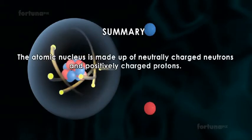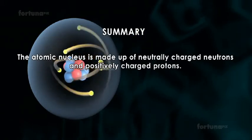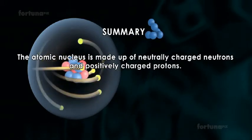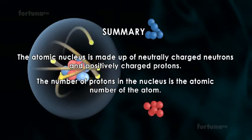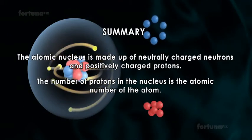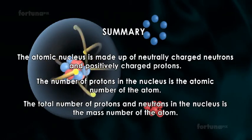The atomic nucleus is made up of neutrally charged neutrons and positively charged protons. The number of protons in the nucleus is the atomic number of the atom. The total number of protons and neutrons in the nucleus is the mass number of an atom.